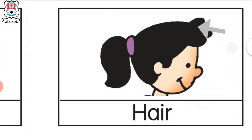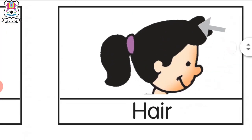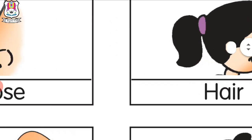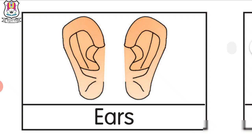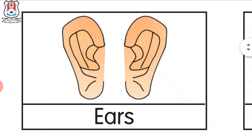What is this? Hair. What is this? Ears. How many ears do we have? Two ears. Two ears. How many ears do we have? Two ears.